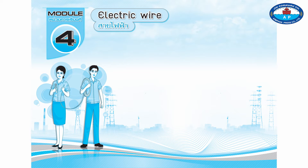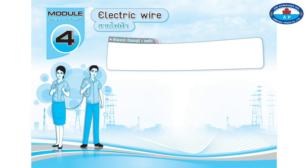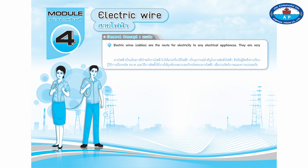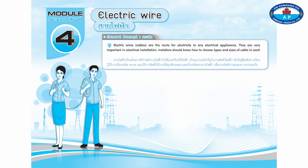Module 4: Electric Wire — General Concept. Electric wires and cables are the route for electricity in any electrical appliances. They are very important in electrical installation. Installers should know how to choose the types and sizes of cable in each application for safety and efficiency.